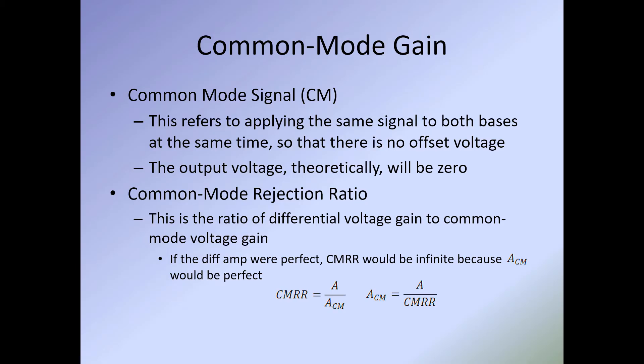Common mode gain refers to applying the same signal to both bases at the same time so there is no offset voltage — the output voltage theoretically will be zero. The common mode rejection ratio (CMRR) is the ratio of differential voltage gain to common mode voltage gain. If the diff amp were perfect, the CMRR would be infinite. Our formula is: CMRR = A (differential gain) divided by ACM (common mode gain). If we want to find the common mode gain, we take the gain divided by CMRR. We will have examples on this.